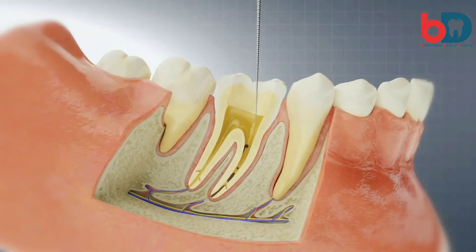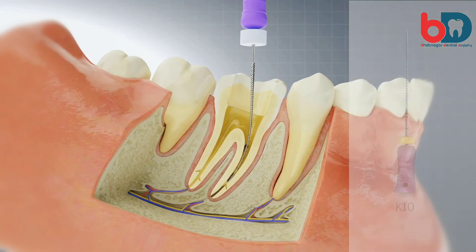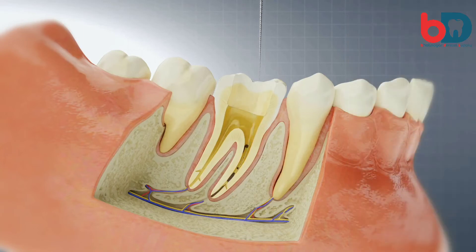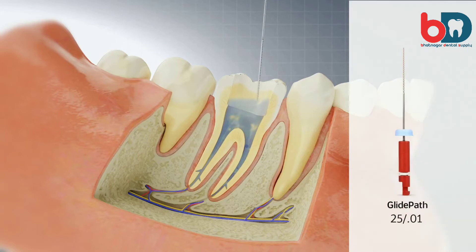To achieve patency with rotary instrumentation, begin with a K10 file in the first two-thirds of the canal. Irrigate the canal after each file change and negotiate the canal with a 2501 Logic glide path until patency is achieved, performing in and out vertical movements in a pecking motion.